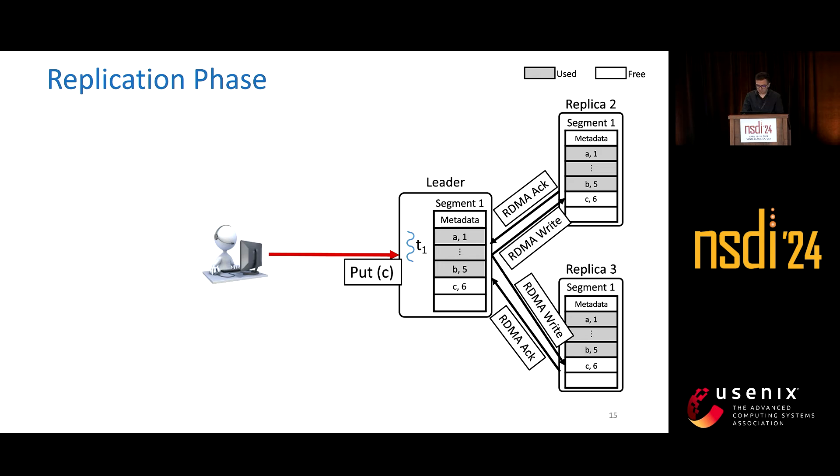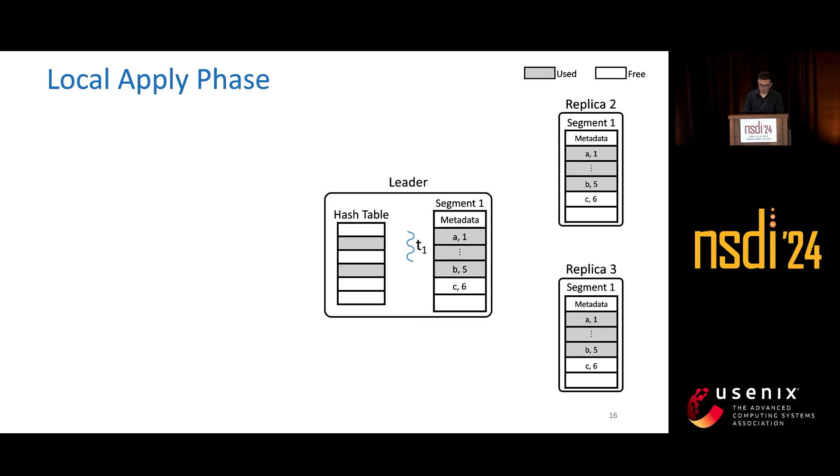Now the thread replicates this entry to the segment stores of followers using RDMA writes. This is done using RC. Once RDMA level acknowledgments are received, the replication phase is considered complete, and we move ahead to the local apply phase.